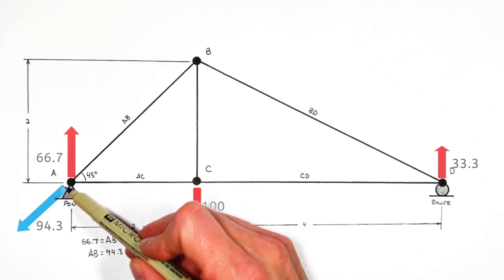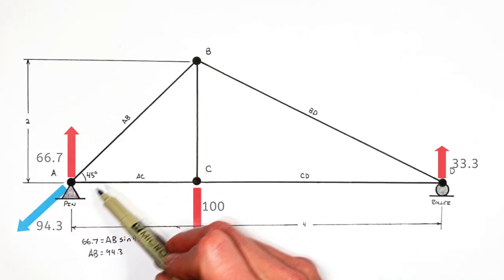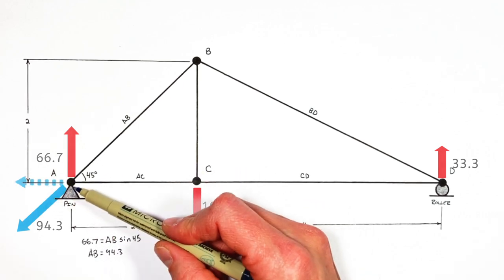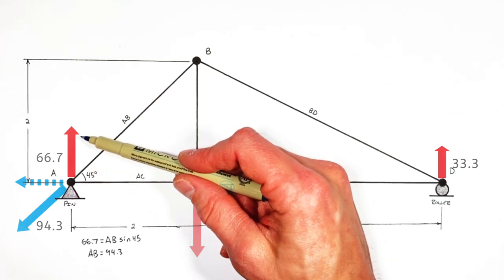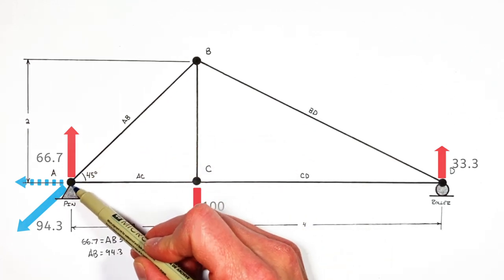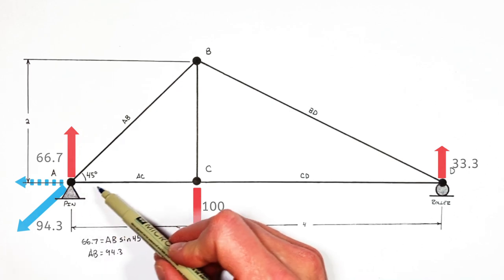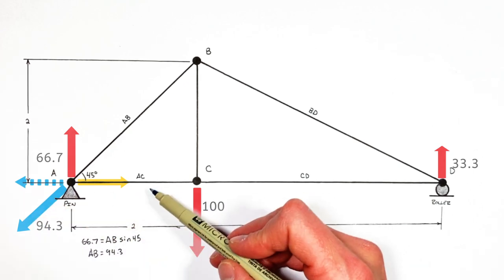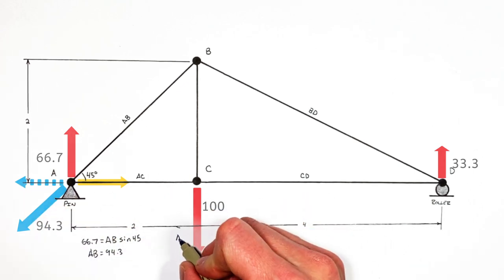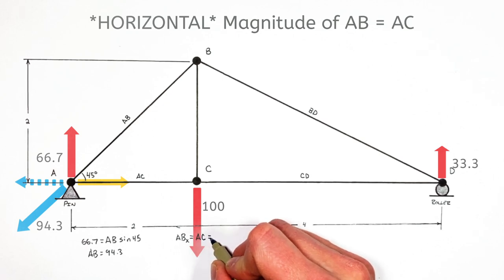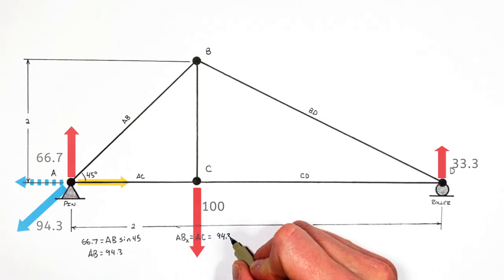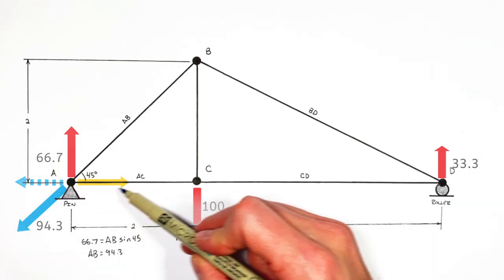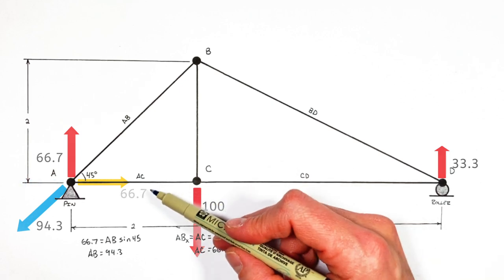Since joint A isn't moving left or right, something has to fight the leftward force from AB. The pin is only acting vertically, so to make the sum of all horizontal forces on joint A equal zero, AC has to pull to the right just as hard as AB is pushing to the left. Knowing the horizontal component of AB is 66.7, we find AC is pulling to the right with a force of 66.7.